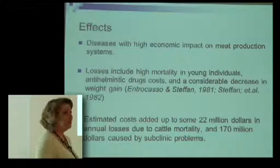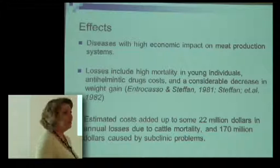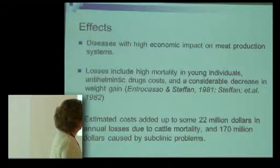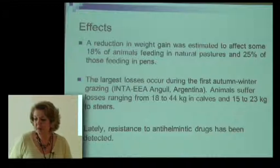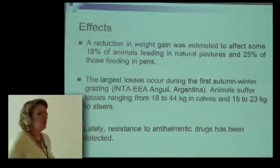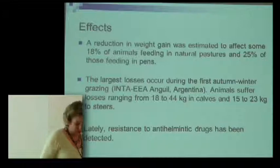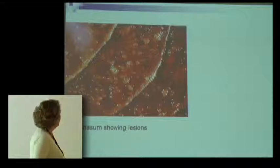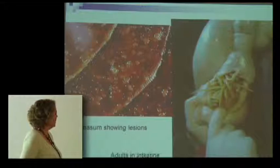There are many parasites that affect cattle, but mostly Ostertagia — the most important and most abundant of all the parasites. They have a high economic impact. The losses are basically mortality in young individuals and loss of weight, which produce considerable costs, and there are also a lot of expenses in drugs to control the diseases. It's about 170 million dollars per year in costs of treatments. The reduction in weight also affects production, and the largest losses occur during autumn-winter. Now there is also resistance to drugs, so it's becoming quite a big problem.